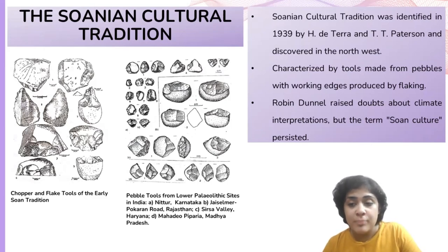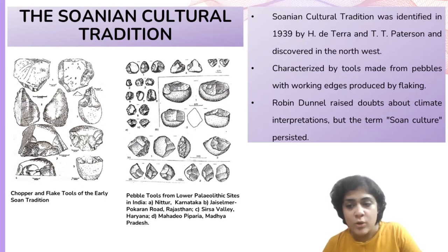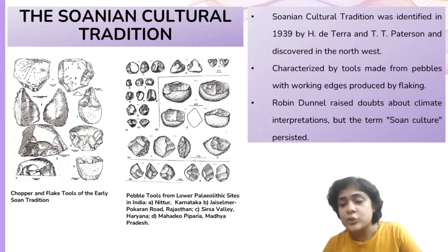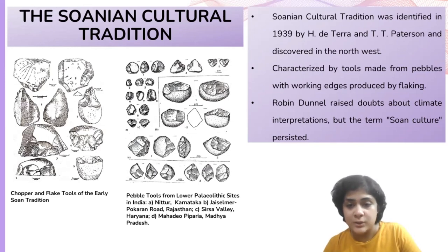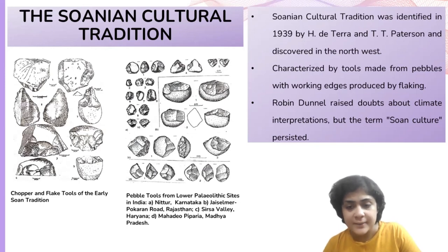The tools associated with this tradition primarily consist of pebbles with working edges along their sides or ends. These edges were created by flaking from one or both surfaces of the pebbles, resulting in the production of tools such as choppers and chopping tools, as depicted in the figure. In the 1980s, Robin Dunnell, who conducted research in this area — now located in Pakistan — raised significant doubts about the paleoclimatic interpretation and cultural sequence proposed by Tera and Patterson.